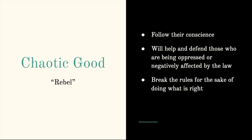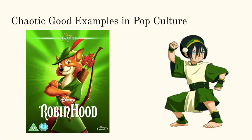Next, chaotic good — the rebel. Chaotic good characters follow their conscience. They will help and defend those who are being oppressed or negatively affected by the law, and they break the rules for the sake of doing what is right. Chaotic good examples include Robin Hood — whatever version you're familiar with — and Toph from Avatar: The Last Airbender.